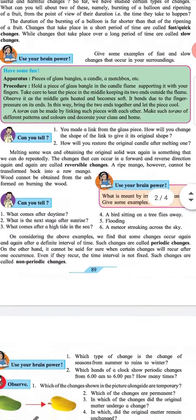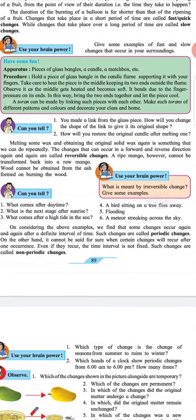Can you tell? You made a link from the glass piece. How will you change the shape of the link to give it its original shape? How will you restore the original little candle after melting one?